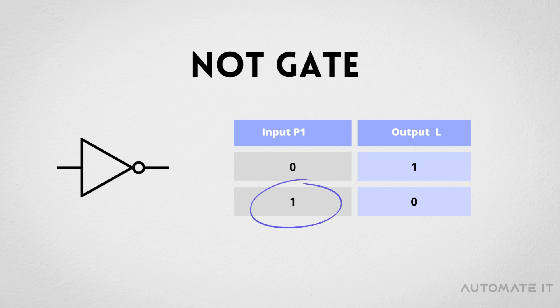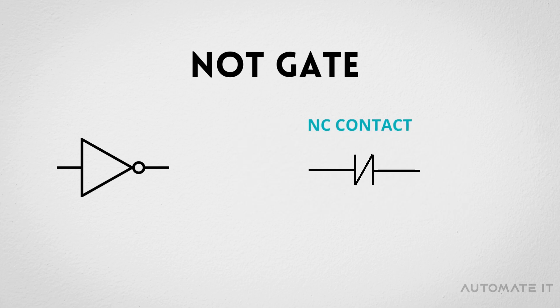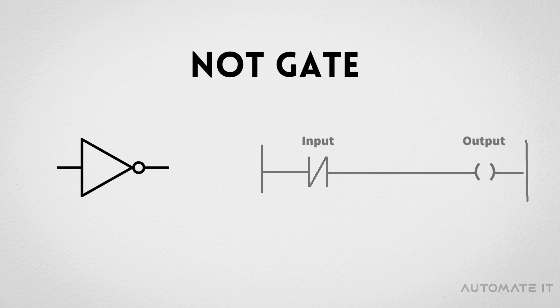When the input is high, then the output is low and vice versa. By using just one normally closed contact, NOT-LOGIC-GATE can be implemented in ladder logic. The input is normally closed and it is in series with the output.